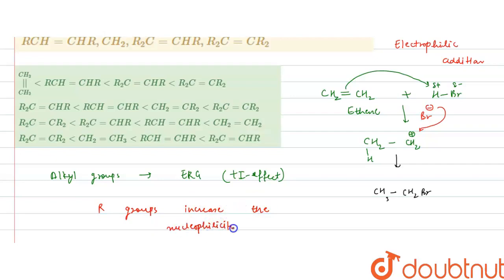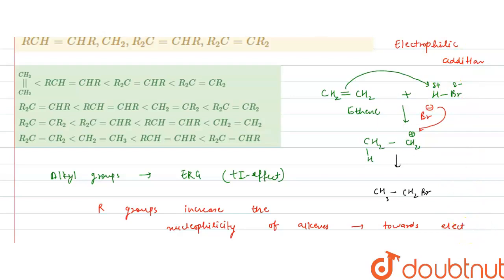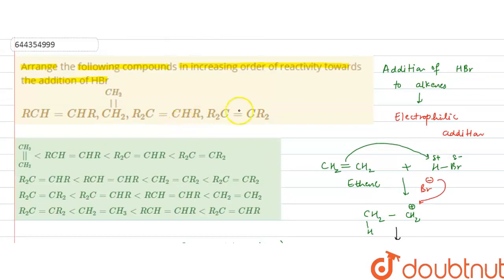This electron donation makes the alkene more nucleophilic. Alkyl groups increase the nucleophilicity of alkenes towards electrophilic addition reactions, making that alkene more reactive towards the addition of HBr.